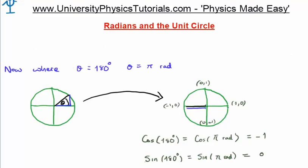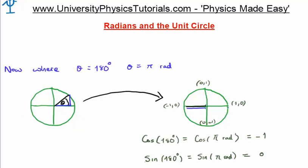When theta equals 180 degrees, or pi radians, we bring the point to the left side of the circle. Here x equals −1 and y equals 0. Since x equals cosine theta and y equals sine theta, the cosine of 180 degrees, or pi radians, is −1, and the sine of 180 degrees, or pi radians, is 0.